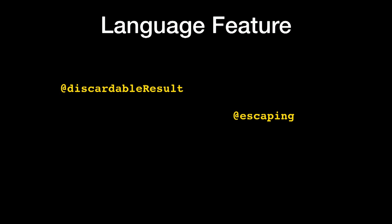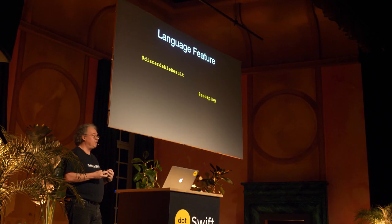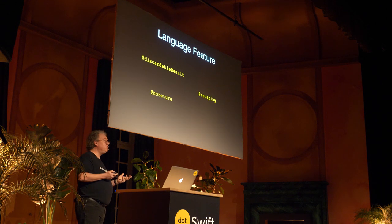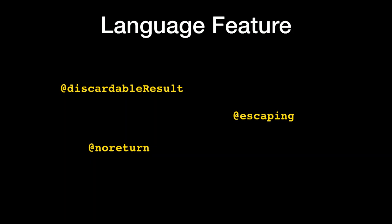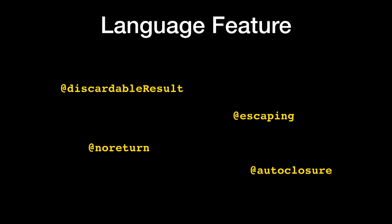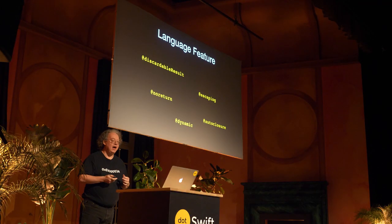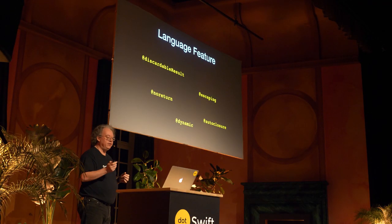@escaping — does this closure need more explicit memory management semantics because it's going to be stored in a property? @noreturn — this function does not return ever, things like exit which terminates your program. And then kind of obscure stuff: @autoclosure, which turns the first argument in a function into a closure — that's how assert is implemented. And then @dynamic, to force dynamic method dispatch, actually going through ObjC message send, rather than using Swift's default dispatch mechanism.